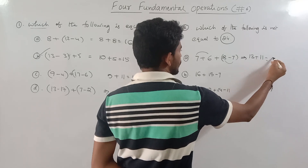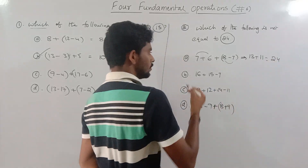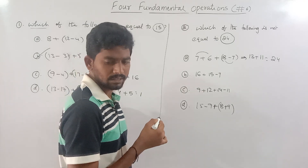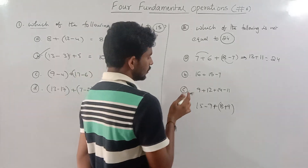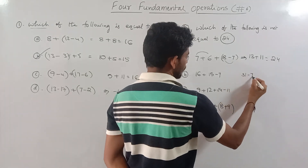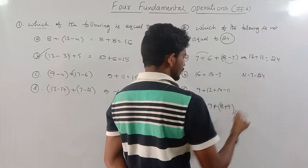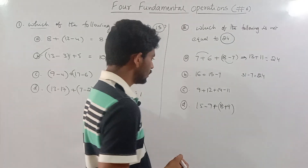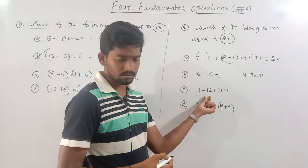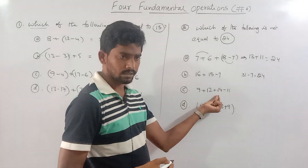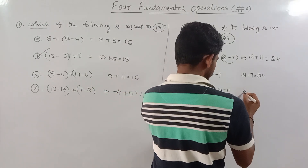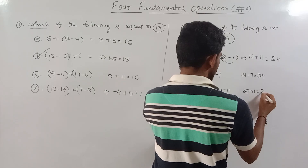So 13 plus 11 equals 24 — yes, it is 24, not 30. 16 plus 15 equals 31; 31 minus 7 equals 24. 9 plus 12 equals 21; 21 plus 14 equals 35; 35 minus 11 equals 24. This equals 24.